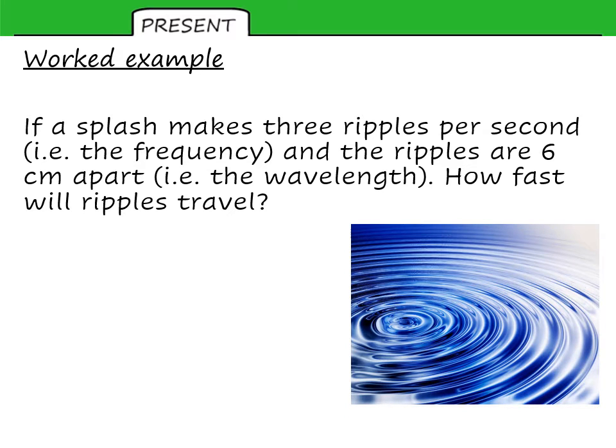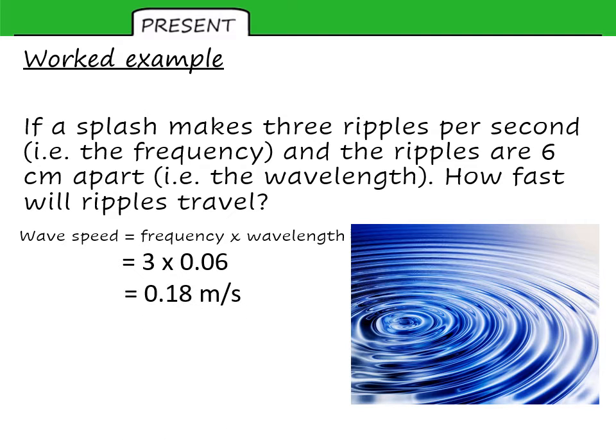So three ripples per second. Inputting that into our equation, we would get three times 0.06 because we need to measure wavelength in meters. Which gives us 0.18 meters per second, 18 centimeters per second, approximately.